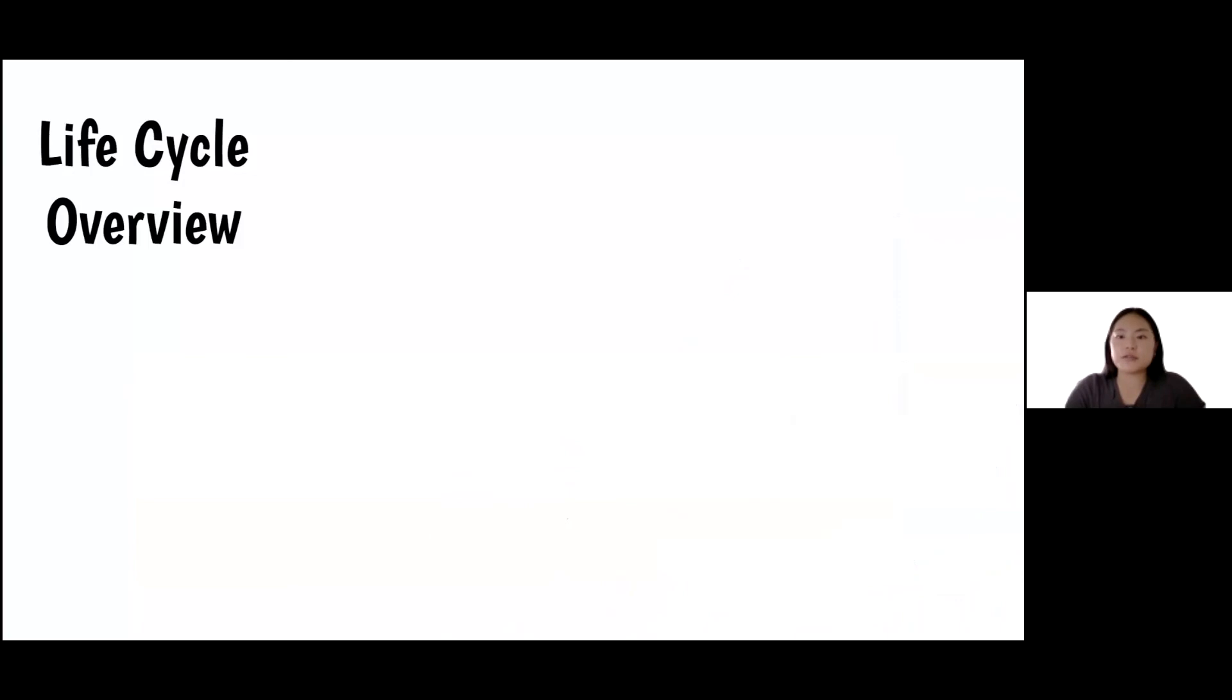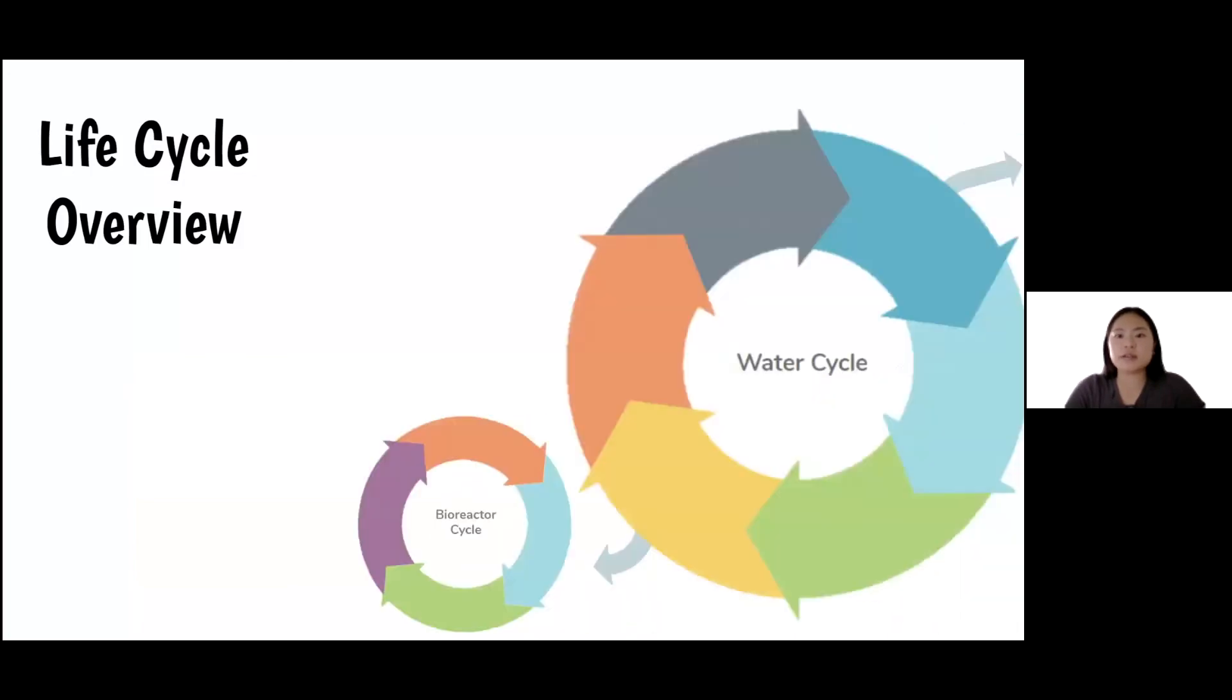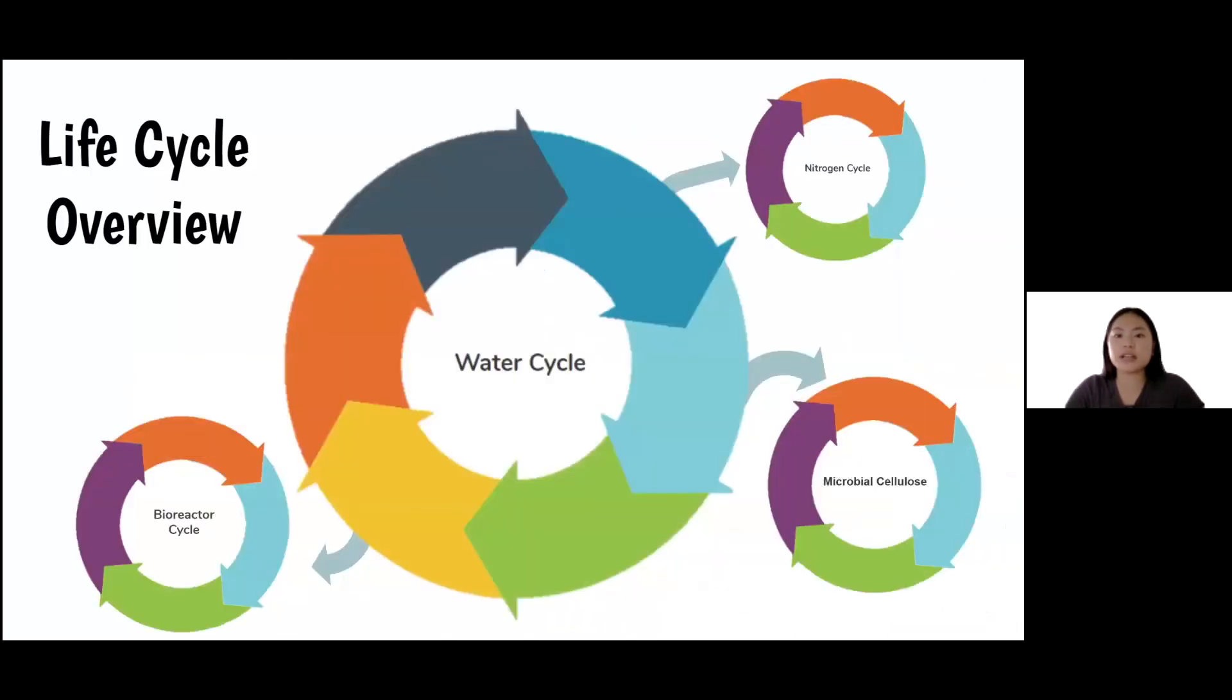Sustainability is an important goal for our product. Our overall life cycle summarizes the main ideas. The water cycle shows how the water is moved and changed throughout the farm, starting and ending with watering crops. From this cycle, we have the nitrogen cycle and microbial cellulose cycle. Another factor we would consider is the material of the bioreactor itself, since it would need to last a long time but also be close to zero waste. This is an important consideration that we would think about in the future after fully understanding the mechanism and the cycle that occurs within it.